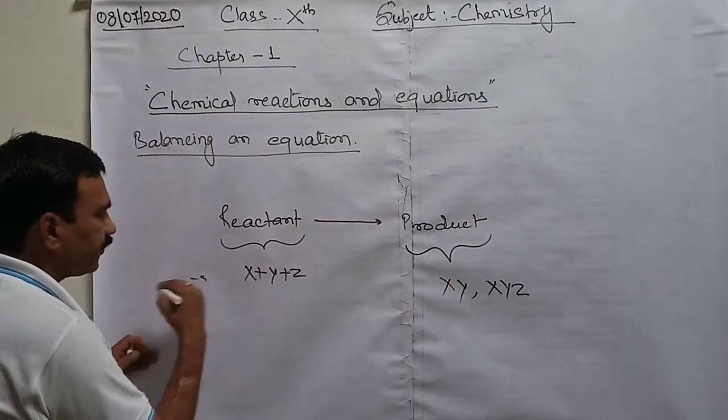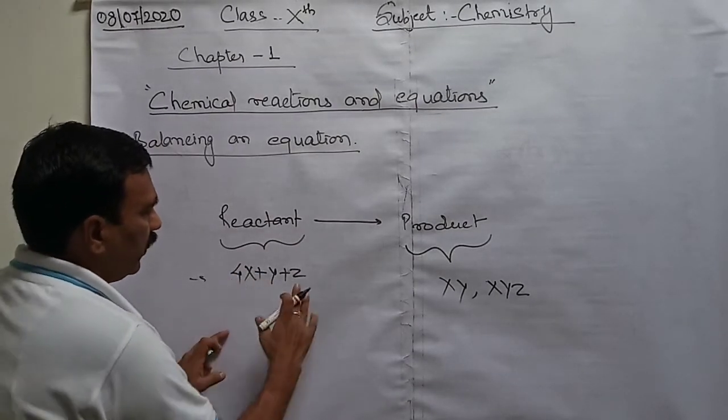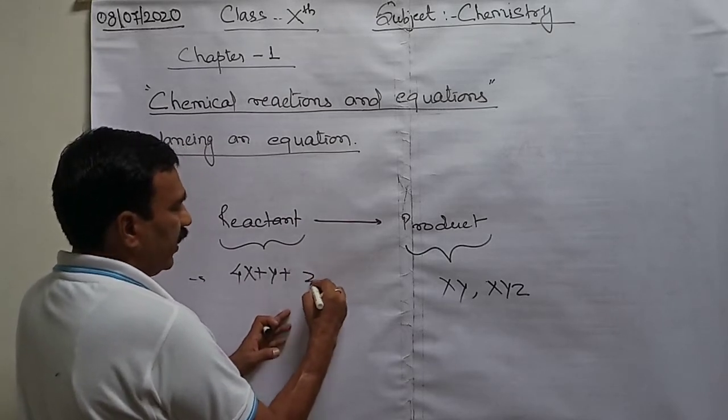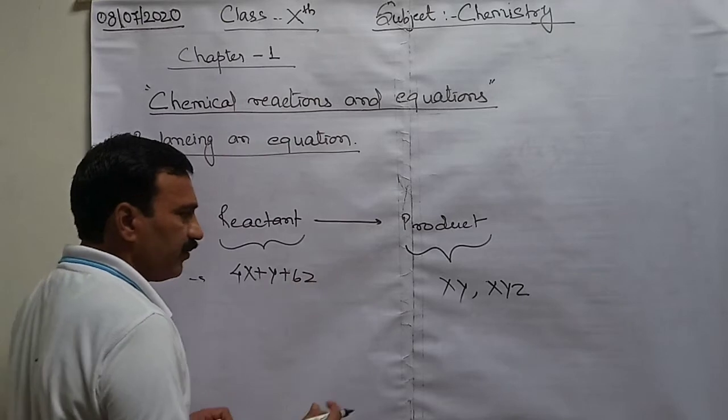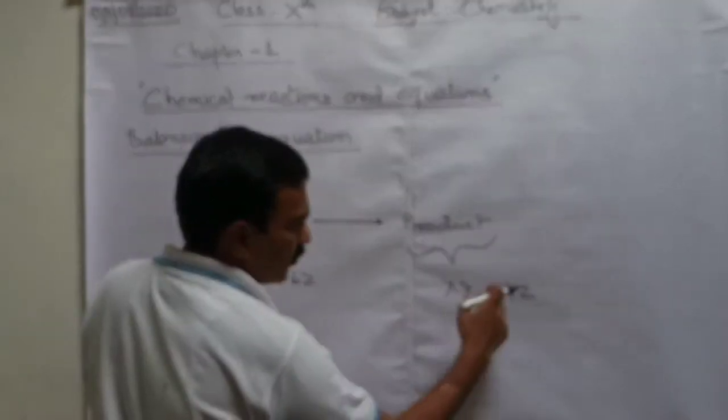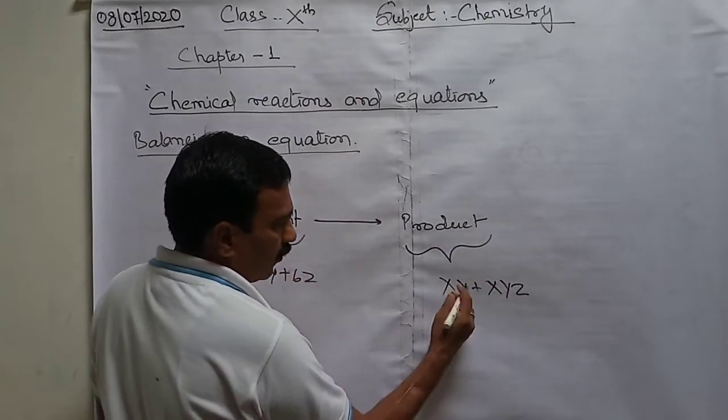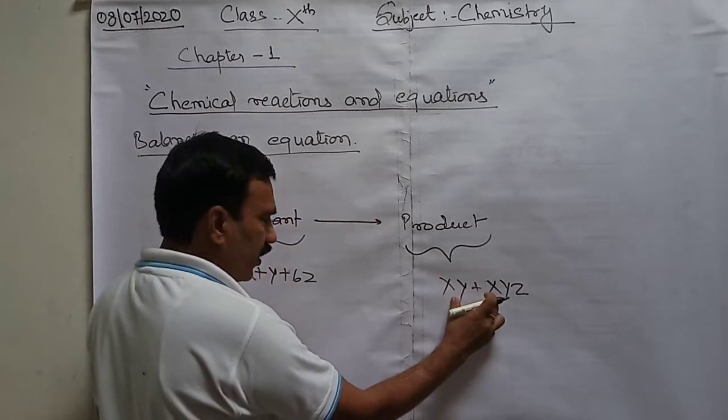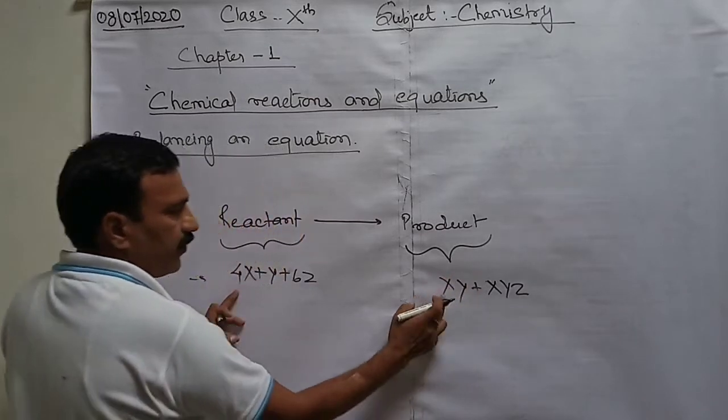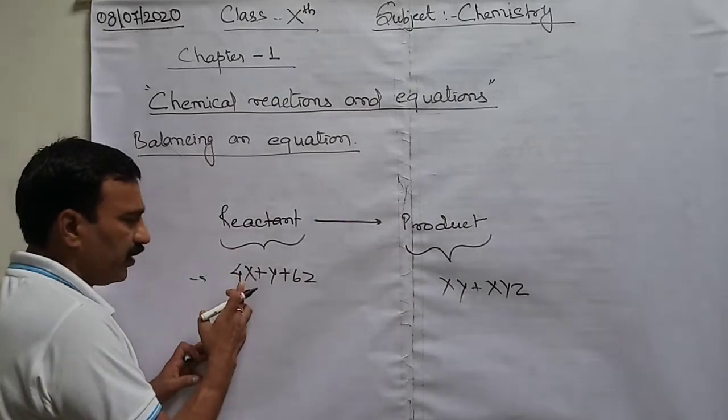Second thing, the amount of the individuals. Suppose X is 4 molecules or 4 atoms and Z is 6 molecules or 6 atoms, this number of components should also be there. This number of components on the right side must be equal to that of the left side.